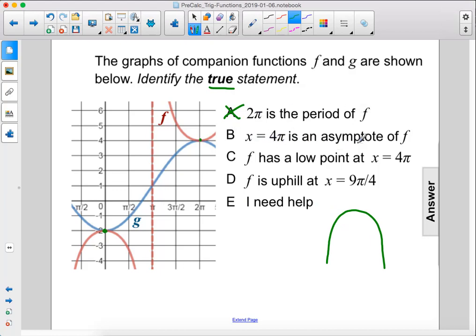x equals 4π is an asymptote of f. Alright, so we have an asymptote at negative π, π. There's going to be one at 3π and at 5π, not at 4π. At 4π we're going to get a piece of graph that looks like this. So this is also false. So these are both false.